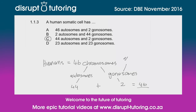Gonosomes, just so you're aware, are your sex chromosomes, and the rest of them are your autosomes. So just to go through why the other options are wrong.